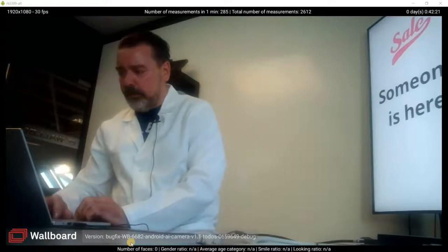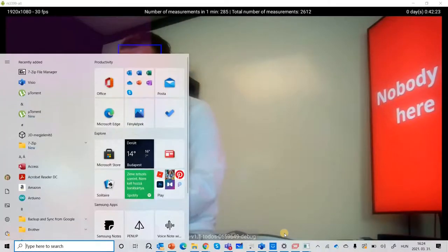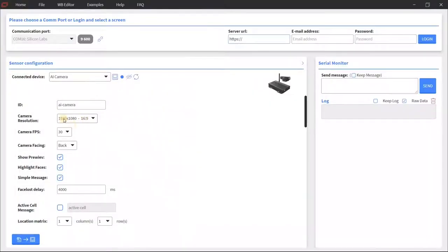And if I just switch over to the sensor designer application here you can see what kind of settings you can set per AI camera device and these settings will be sent over to this connected Samsung MagicInfo application. So here you can see the camera resolution or you can set the camera resolution, the FPS.